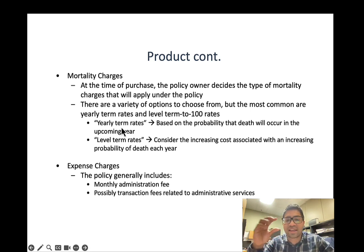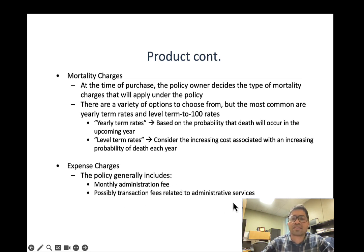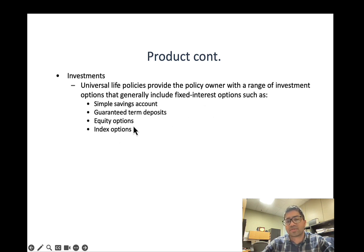A percentage of the universal life premium goes toward buying permanent insurance for yourself. Apart from that, there are expense charges — a monthly administration fee and possible transaction fees. The third part is that some portion of the premium goes toward investment. Universal life policies provide a range of investment options including fixed interest options such as savings accounts and guaranteed term deposits, as well as equity or index options — for example, the TSX 60 or TSX Composite indexes in Canada.